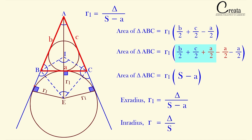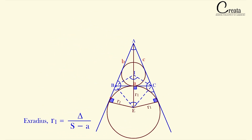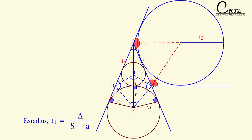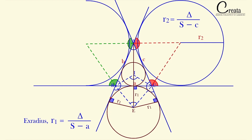In-radius is equal to area of triangle upon semi-perimeter, and x-radius is equal to area of triangle upon semi-perimeter minus a. Based on this same philosophy, if we take the other two angles as exterior angles, we can make another x-circle with radius r2, where r2 equals area of triangle ABC upon semi-perimeter minus c. Similarly, we can make one more x-circle with the side b, and that x-radius equals area of triangle upon semi-perimeter minus b.